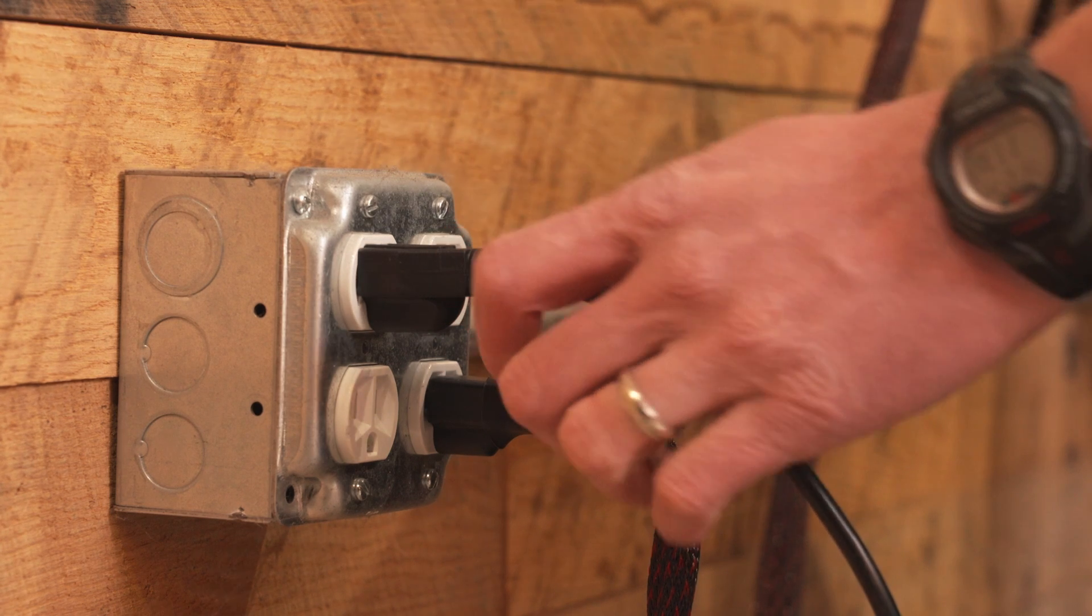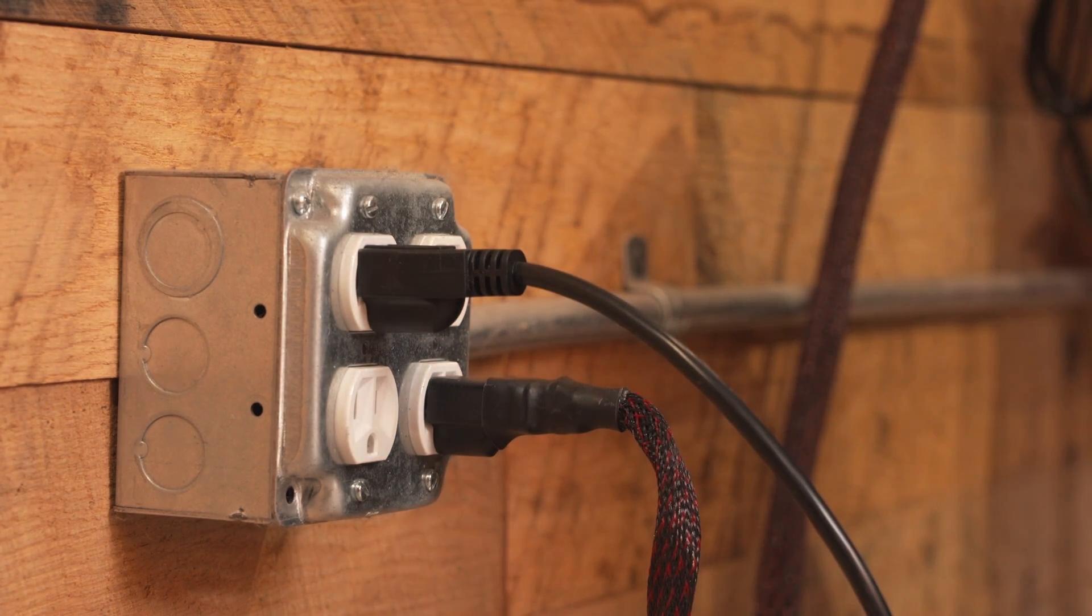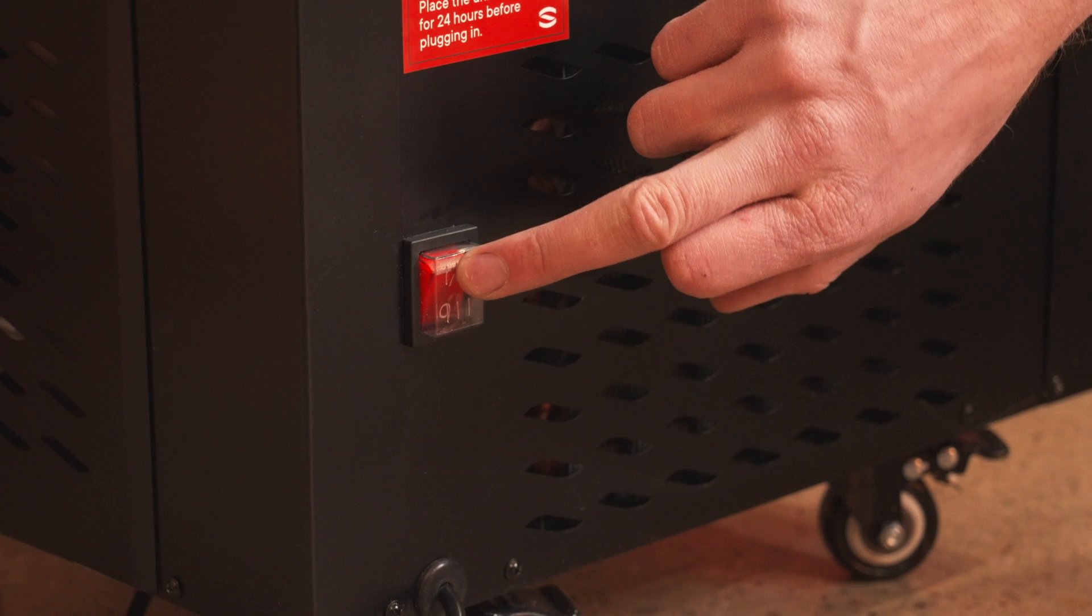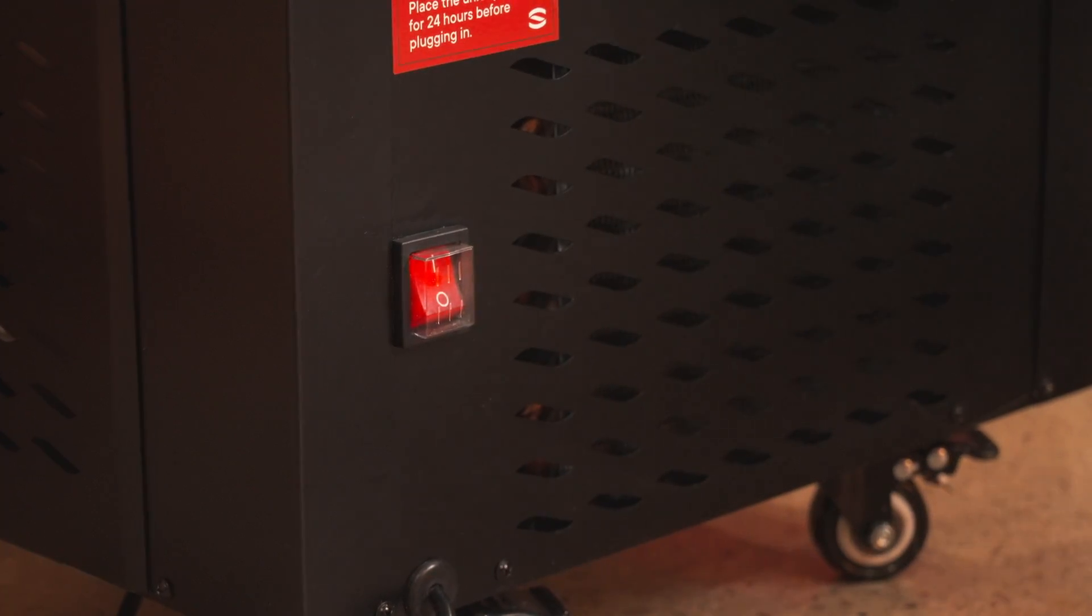Now it's time to start it up. Plug your chiller into the wall outlet and turn it on by locating the power switch on the back. Your chiller is now operational.